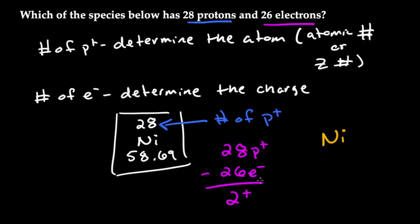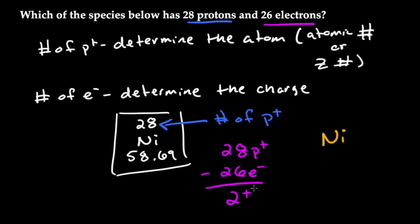Remember, protons are positive and electrons are negative. You can always just subtract the two and see which one's more — that's going to determine the charge. If we had more electrons, this would be a negative charge. But because we have more protons, this is going to be a positive charge. Make sure protons are positive and electrons are negative, subtract them, and whichever is in excess tells you the charge. So this is going to be Ni with a 2+ charge.